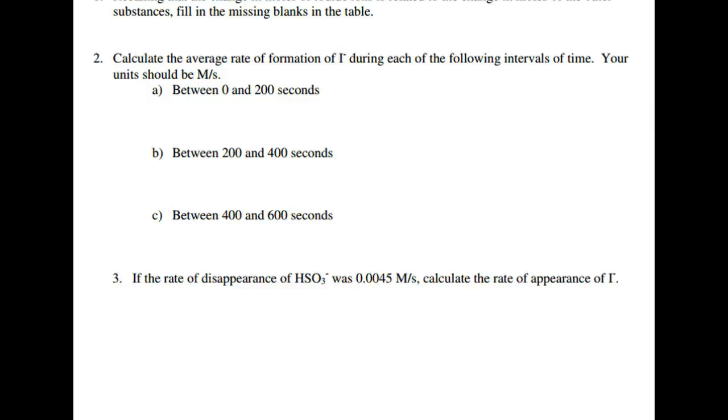So for number two, it's asking for the average rate of formation of I minus between those three different amounts of seconds. Now you have to remember that the units are molarity per second, but on that table, they gave us moles. So we can calculate the change in moles between 0 and 200, which is 0.0021. And based off of the information they gave us, we have a volume of 0.45 liters. If we go to one liter, we should get a molarity of 0.0046.